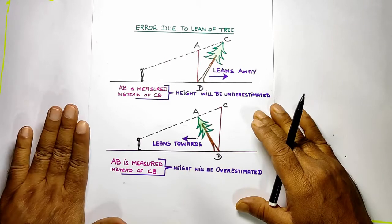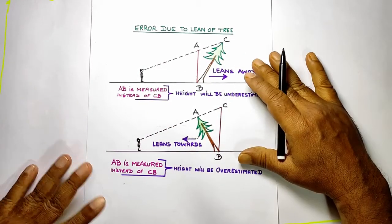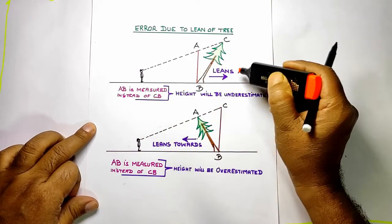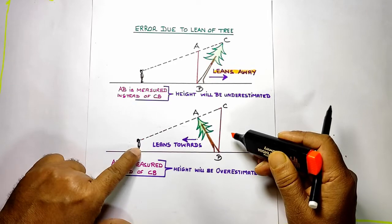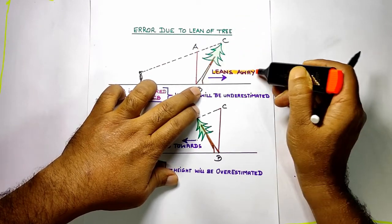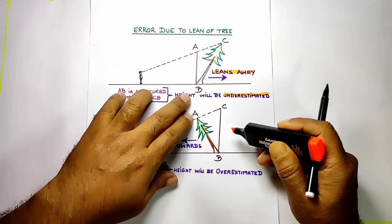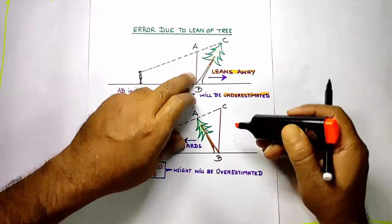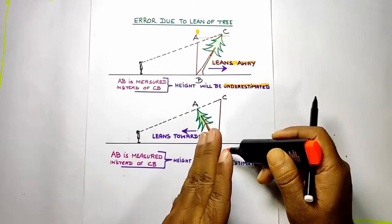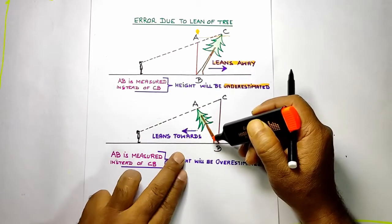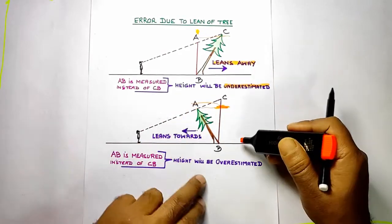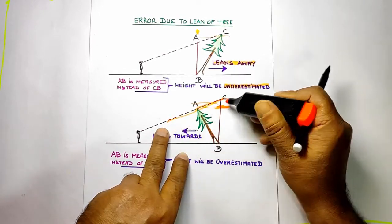Let us understand: for a vertical tree we already know how to take the height. But trees are not always vertical — they lean either away from or towards the observer. When leaning away, the tree is underestimated — the actual height may be more but we measure it as less. When the tree leans towards the observer, it is overestimated — the actual height is somewhere lower but we measure it higher because of the angle taken.